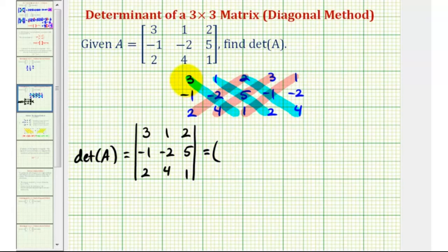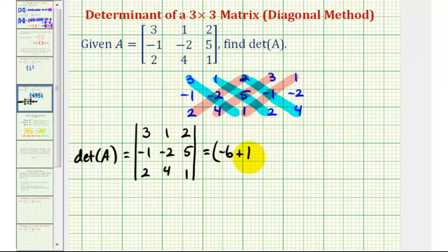So we'll have three times negative two times one, that's negative six, plus one times five times two, that's ten, plus two times negative one times four, that's negative eight.